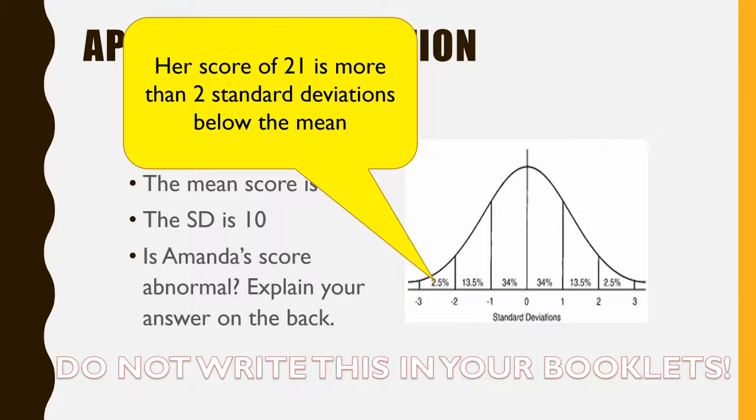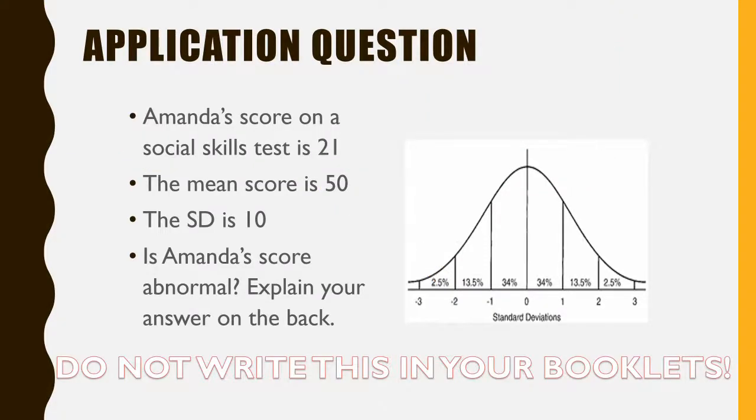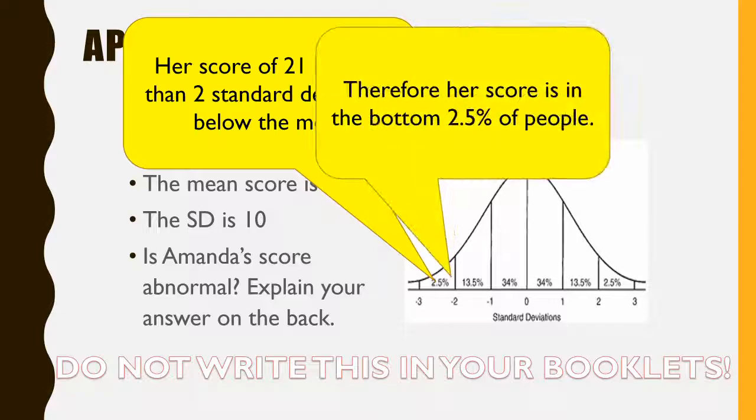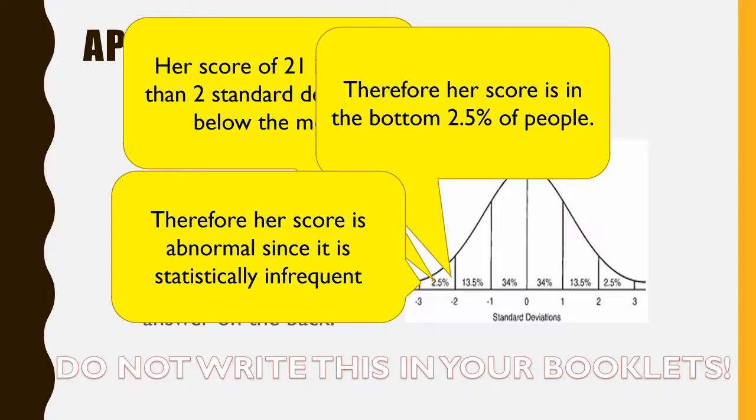Her score of 21 is more than two standard deviations below the mean. If you look at this, she falls into that category there. Therefore, her score occurs in 2.5% of people. Therefore, her score, which we see of 21, is statistically infrequent. She falls into that top 2.5% of people. Therefore, she is abnormal.